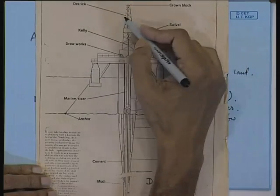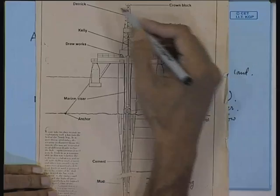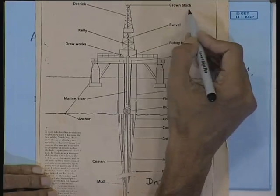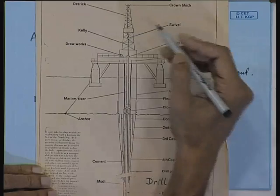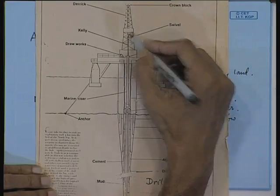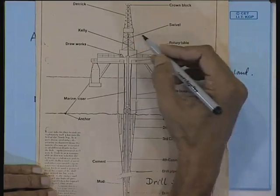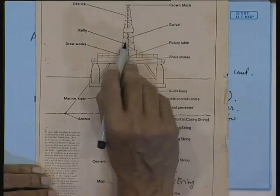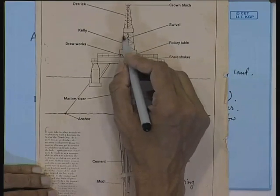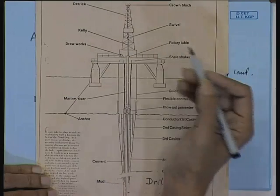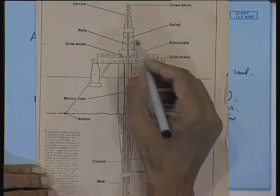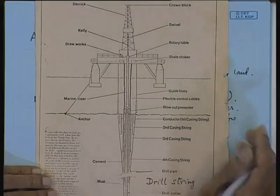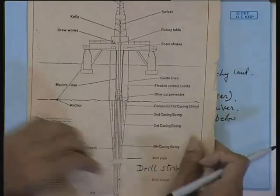The drill string is suspended from the derrick via pulleys — this is your drilling derrick. It is suspended via a swivel, which allows the whole drill string to rotate. This is actually a universal-type joint. Here you will also find a kelly, which is a square piece of rod.